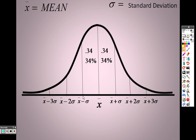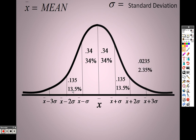Within one standard deviation of the mean you have 68%, each side being 34%. Then within two standard deviations of the mean you have 95%. The additional sections on each side are 13.5% each — so 34 plus 34 is 68, and adding 13.5 plus 13.5 gives you 27 more, totaling 95%. So 95% of everyone who takes a test should fall within two standard deviations of the mean.